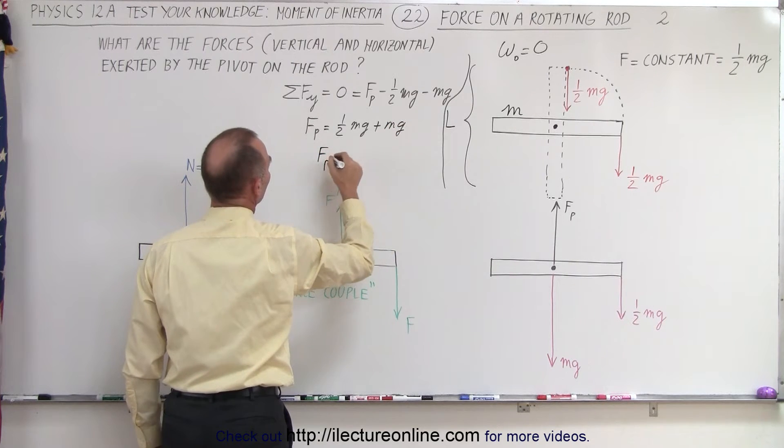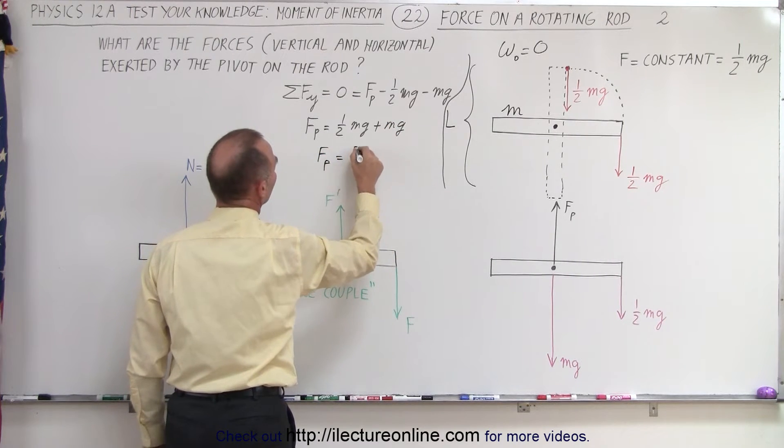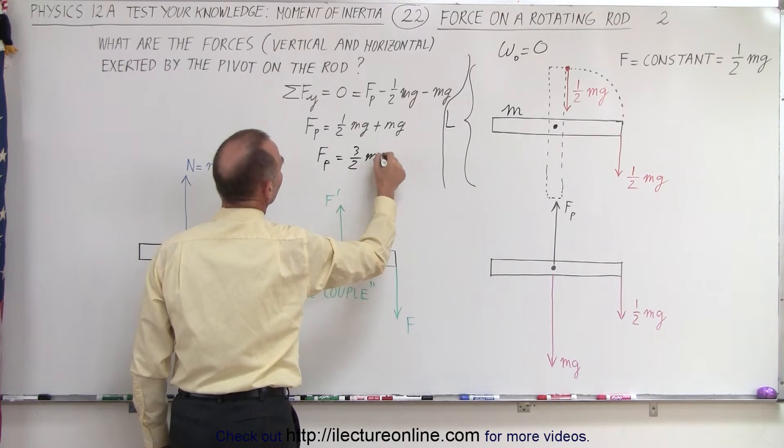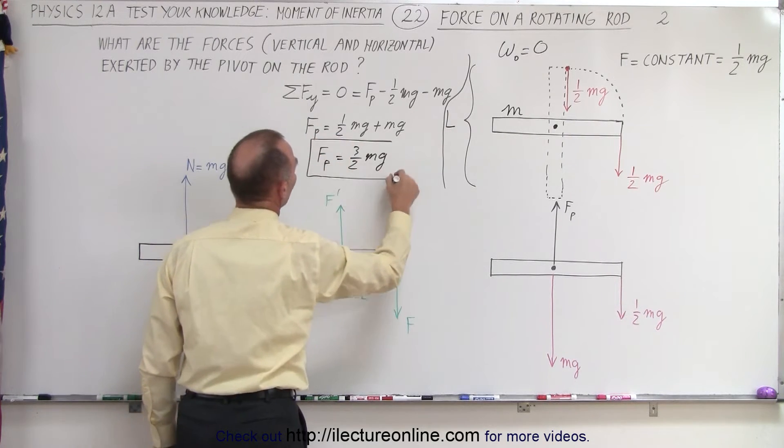So, in other words, the pivot, the force on the pivot in the vertical direction, is equal to three-halves the weight of the rod. It's simply the sum of the two forces.